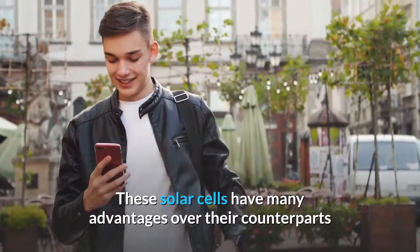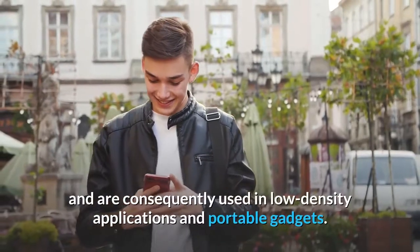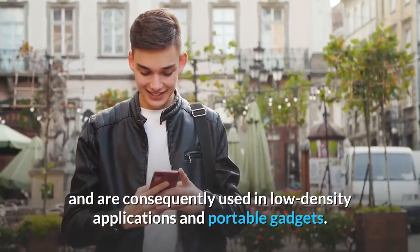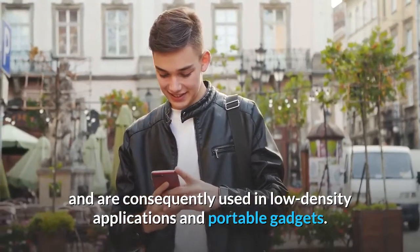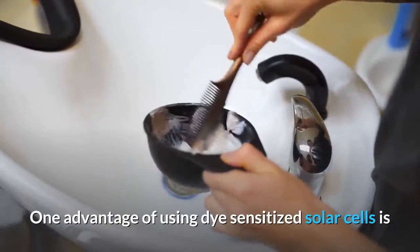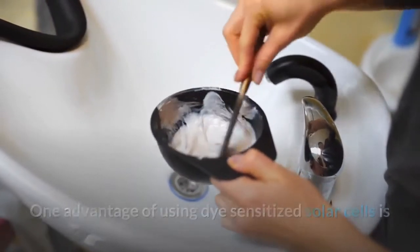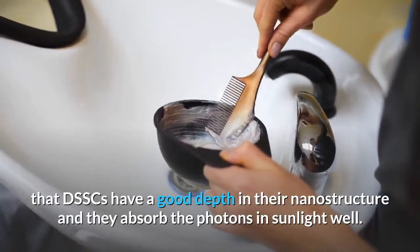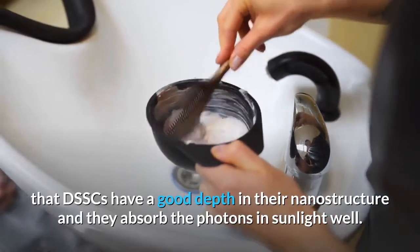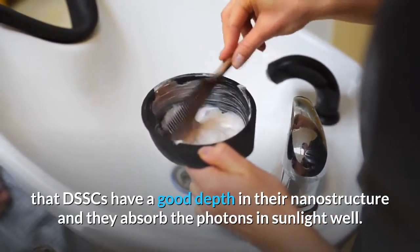These solar cells have many advantages over their counterparts and are consequently used in low density applications and portable gadgets. One advantage of using dye sensitized solar cells is that DSSCs have a good depth in their nanostructure and they absorb the photons in sunlight well.